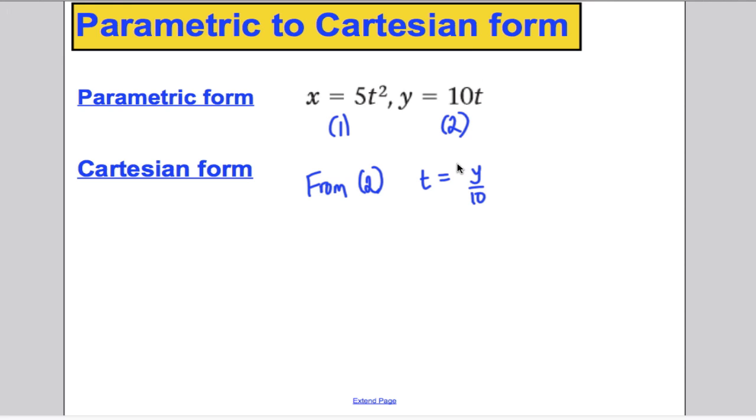Rearranging this equation here. And then if you substituted into equation 1, you would have x is equal to 5t squared, so 5 and then y over 10 squared, substituting for t.